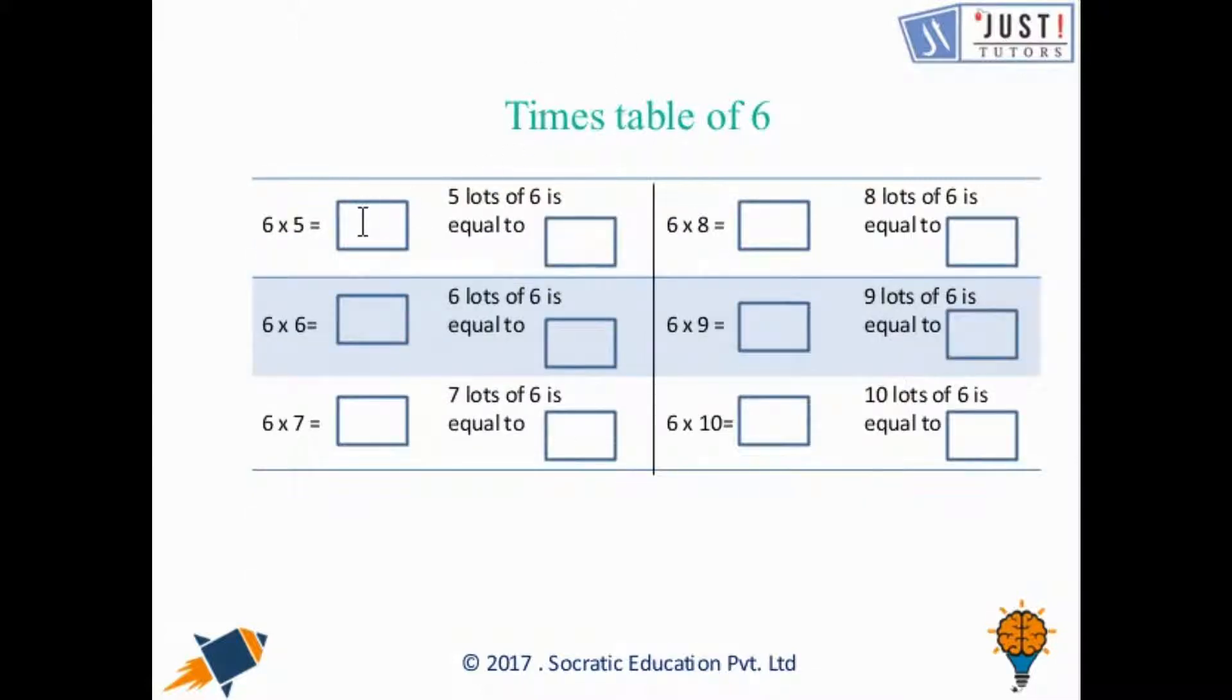Moving forward now, 6 times 5 is 30, 6 times 6 is 36, 6 times 7 is 42, 6 times 8 is 48, 6 times 9 is 54, and 6 times 10 or 10 lots of 6 is equal to 60. That is the 6 times table with us.